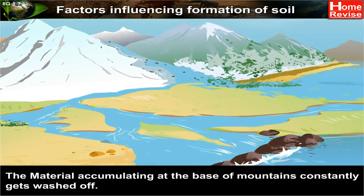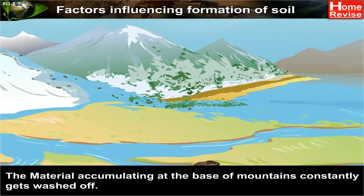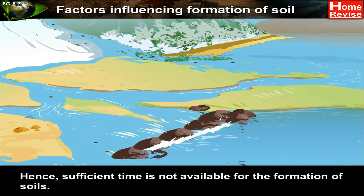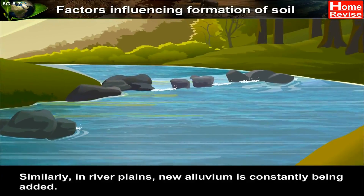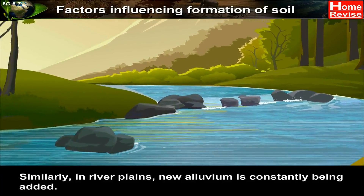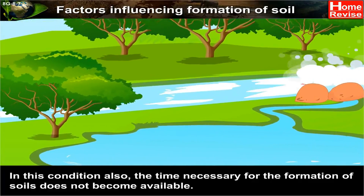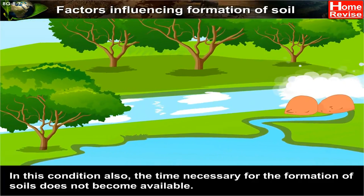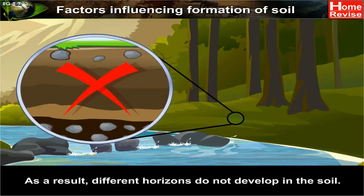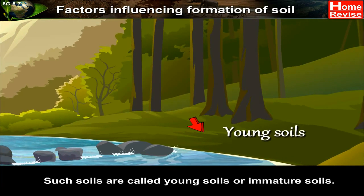The material accumulating at the base of mountains constantly gets washed off; hence, sufficient time is not available for the formation of soils. Similarly, in river plains, new alluvium is constantly being added, so the time necessary for soil formation does not become available. As a result, different horizons do not develop in the soil. Such soils are called young soils or immature soils.